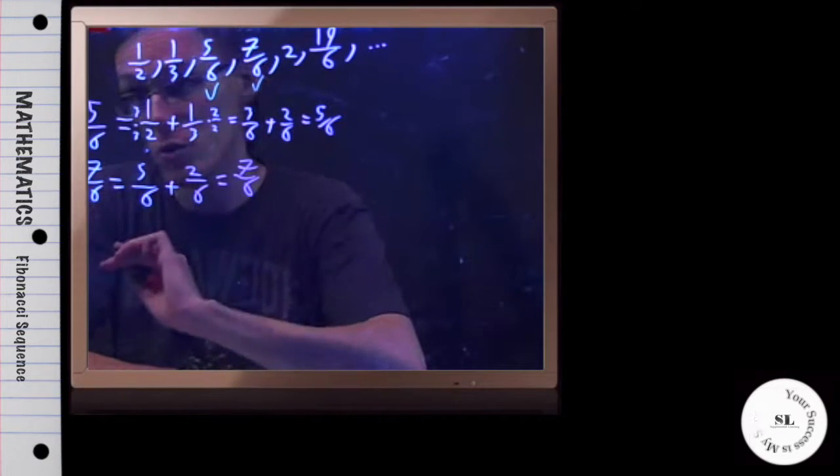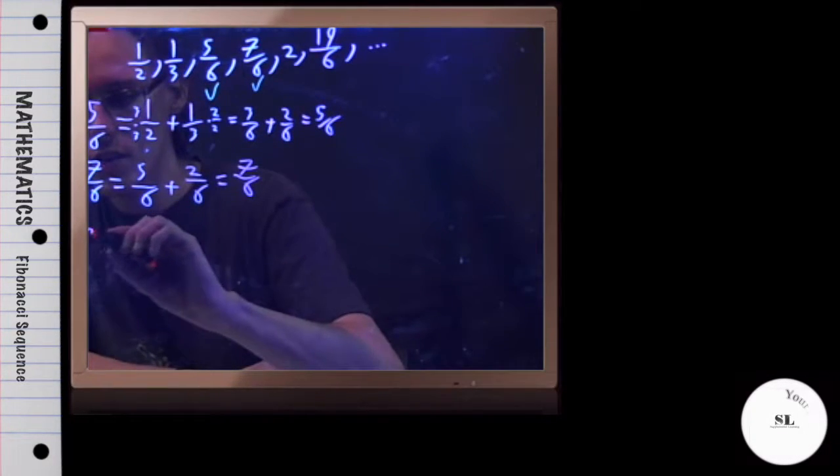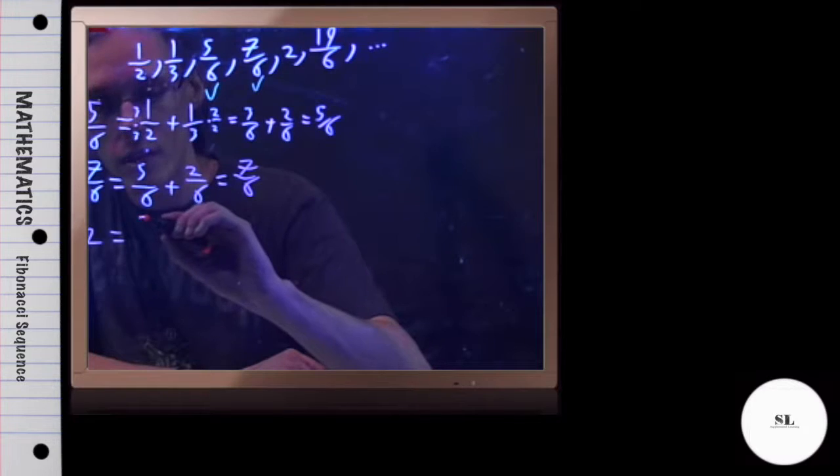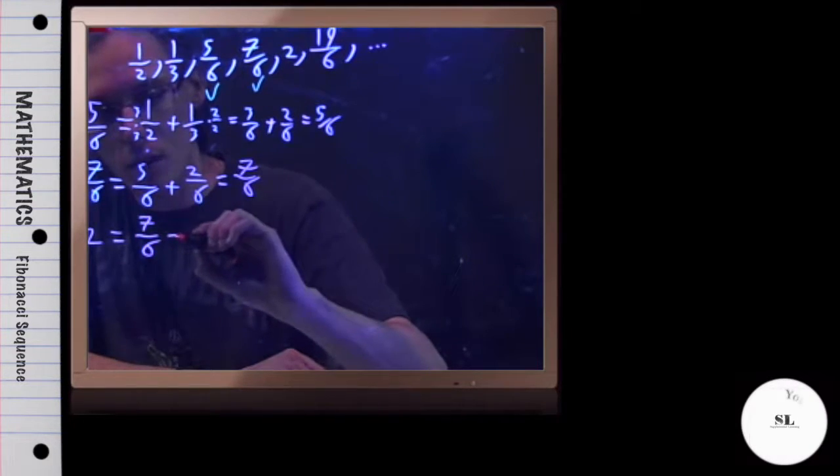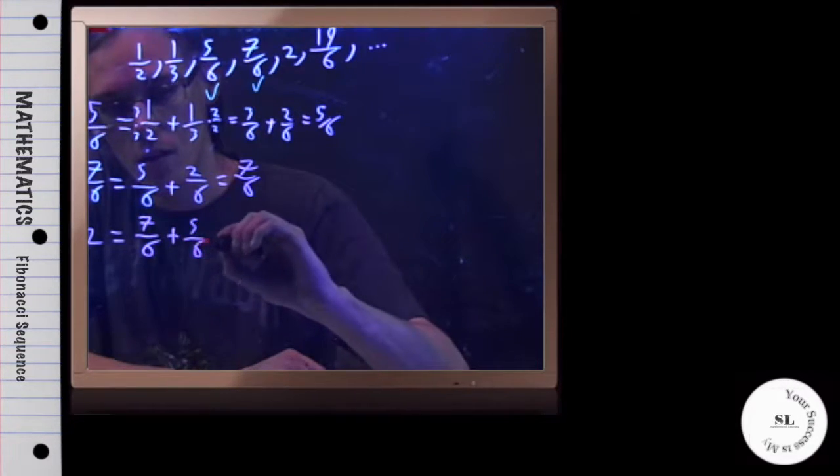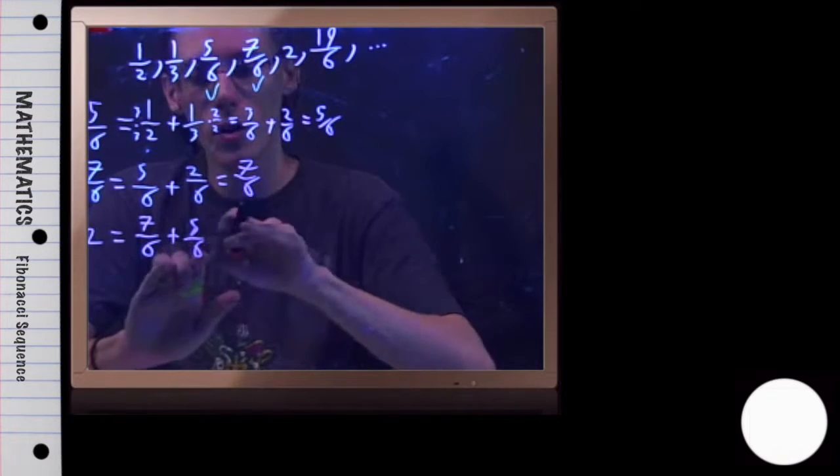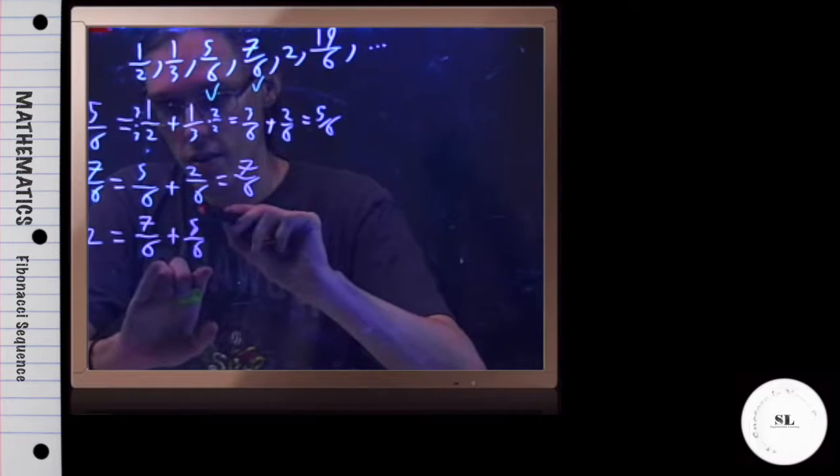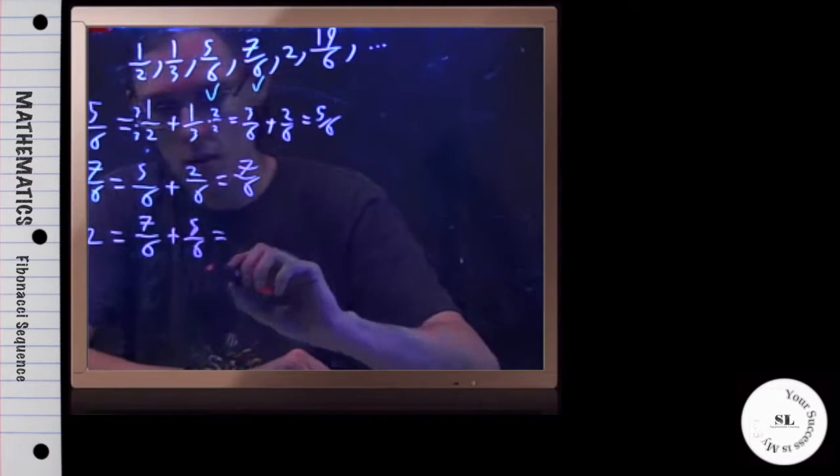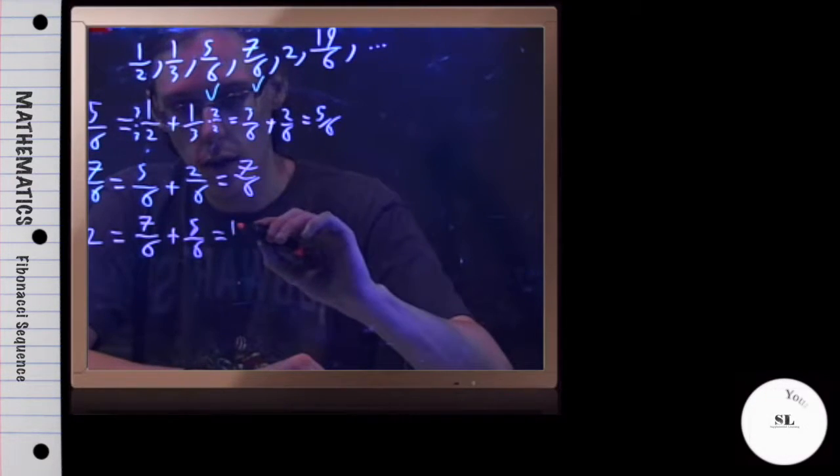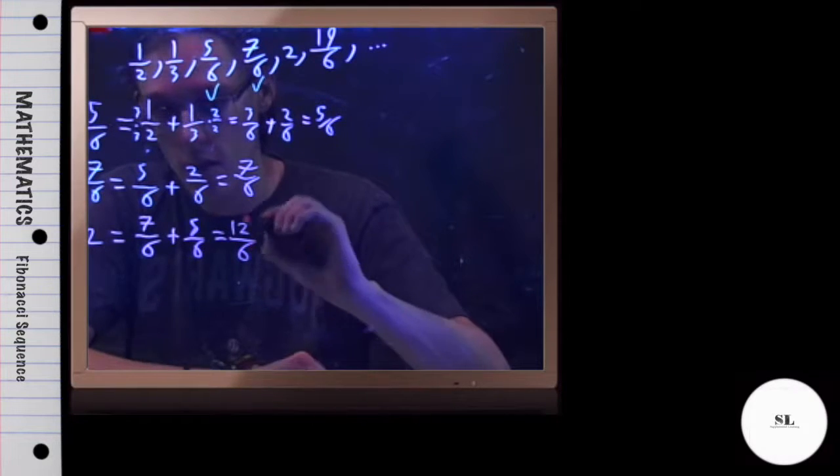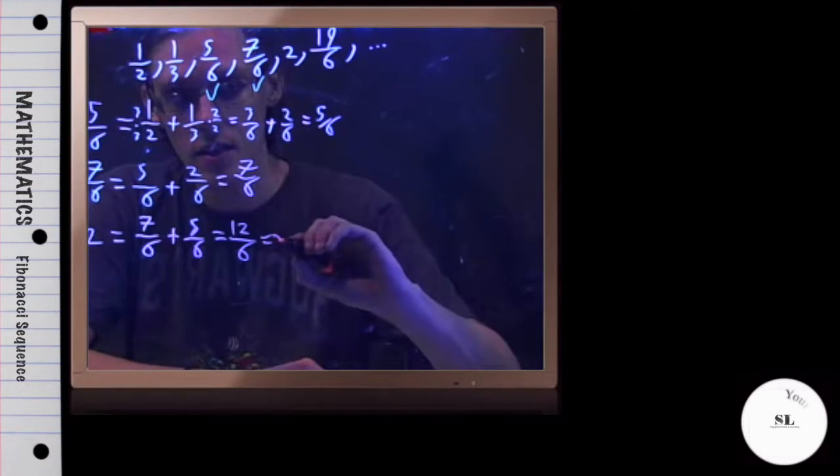2 should be the sum of these previous two numbers. So let's see if 2 equals 7 over 6 plus 5 over 6. Well, in this case, my denominators already match. No work and no remembering what I did before necessary. I'm just going to add straight across. So 7 plus 5 is going to be 12 divided by 6. And 12 divided by 6 is indeed 2.